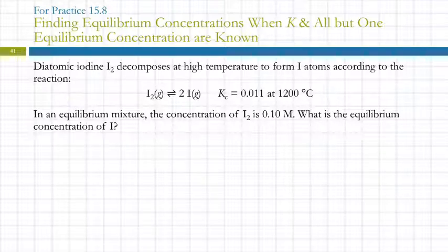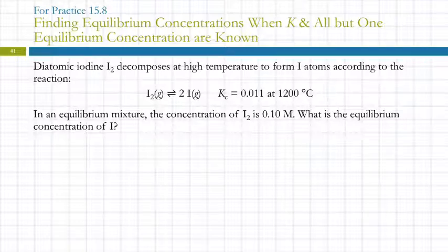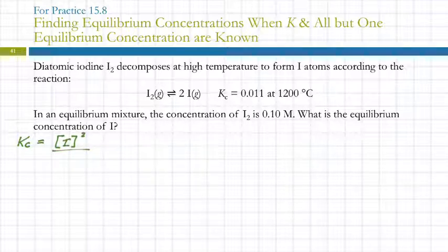Diatomic iodine decomposes at high temperature to form iodine atoms according to this reaction. In an equilibrium mixture, the concentration of I₂ is 0.10 molar. We want the equilibrium concentration of I. It never hurts to start by writing out the equilibrium constant expression. For this reaction, Kc equals the concentration of iodine atoms squared, divided by the concentration of iodine molecules — not squared.